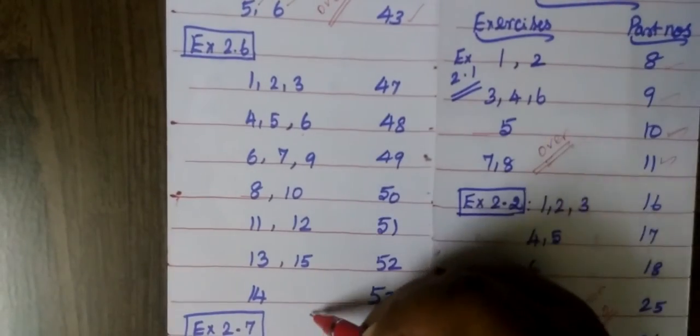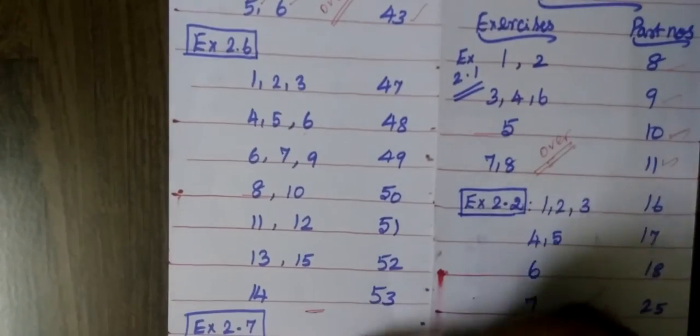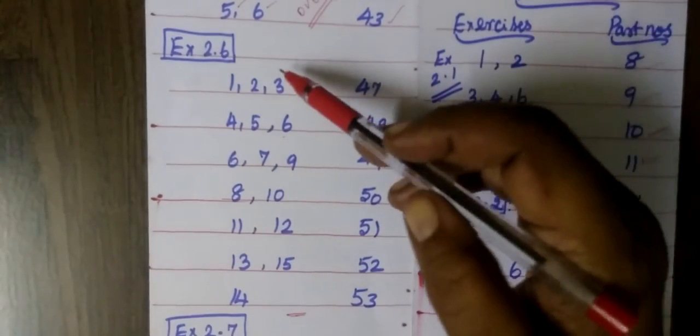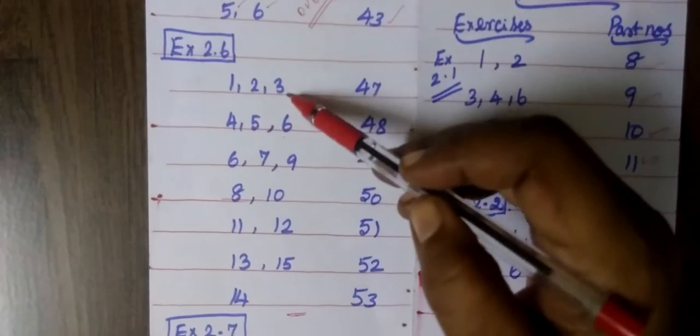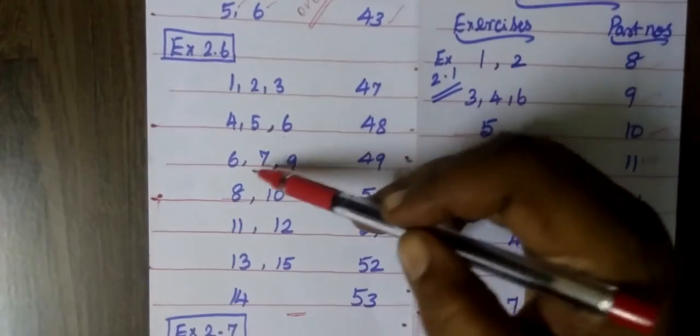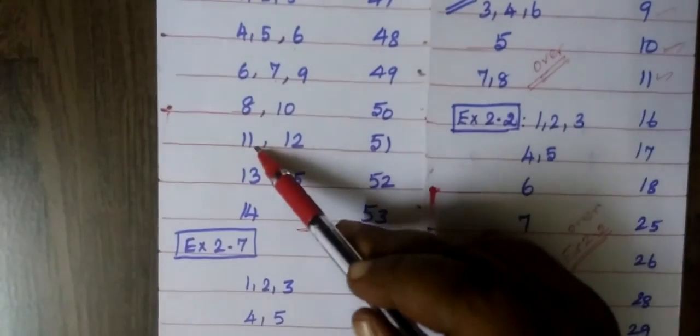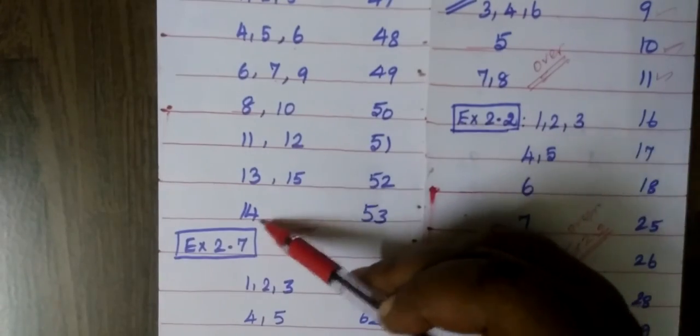Exercise 2.6 - so we are going to stop at this part. Then next we will see in the next video. Exercise 2.6 has question numbers 1, 2, 3, 4, 5, 6, 7, 8, 9, 10, 11, 12, 13, 14, 15.